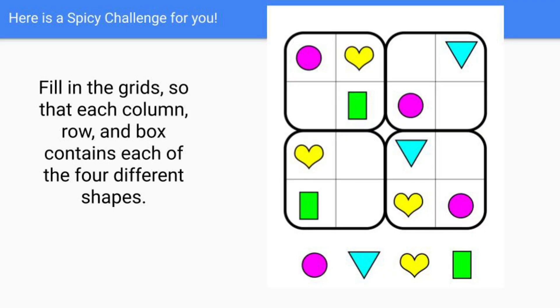So you need to fill in the grids so that each column, row and box contains each of the four different shapes. So as you can see down the bottom, you've got a pink circle, a blue triangle, a yellow heart and a green rectangle. Each small box inside the big box needs to have one of each shapes. All right.